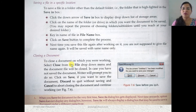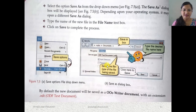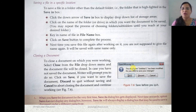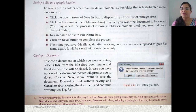To close the document you are working on, select Close from the File drop-down menu. If you have not saved the document, OpenOffice will ask whether you want to save your changes. You can click Save to save, Discard if you want to quit without saving, or Cancel if you want to stay and continue working.